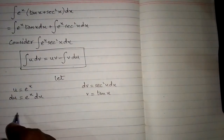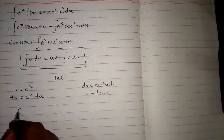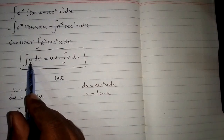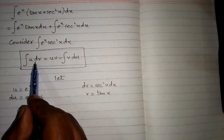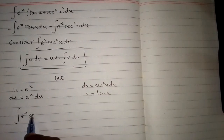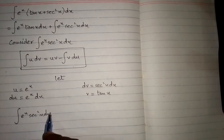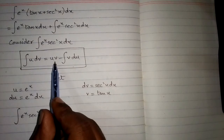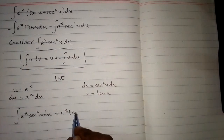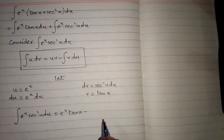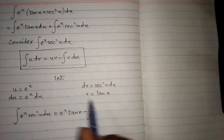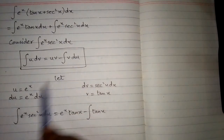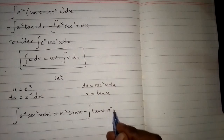Now we apply the integration by parts formula. In place of u we put e to the power x and in place of dv we put sec squared x dx. This gives us e to the power x times tan x minus the integral of v du, where v is tan x and du is e to the power x dx.